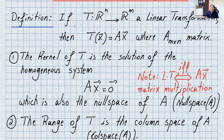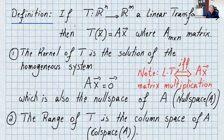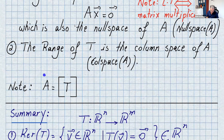The kernel of T is the solution of the homogeneous system: take the matrix A, multiply it by x, and set it equal to the zero vector. This is also called the null space of A. So whenever you want to find the kernel of a linear transformation, you just find the null space of that matrix. The range of the linear transformation is simply the column space of A.